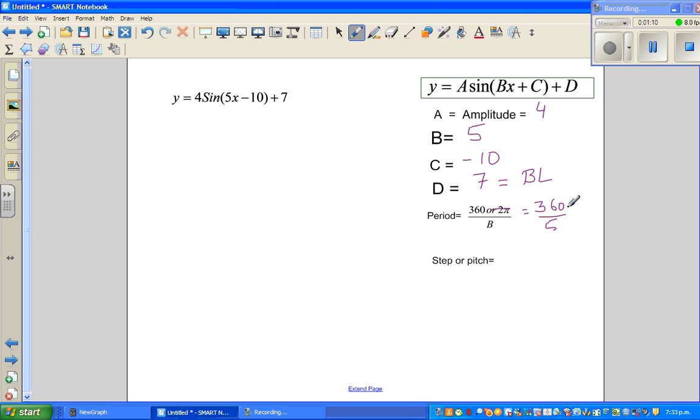And 360 divided by 5 is same as 720 divided by 10, which is 72. So the period is 72.